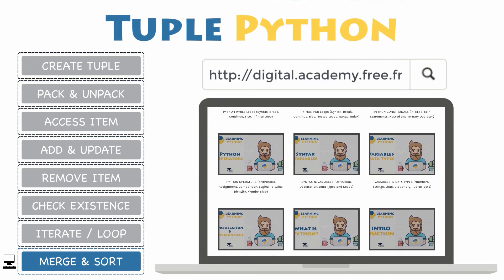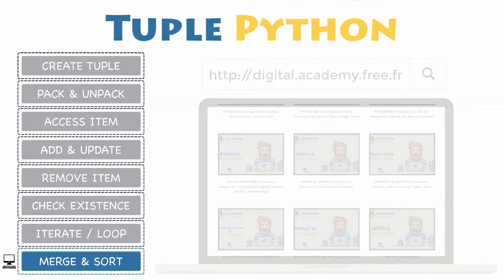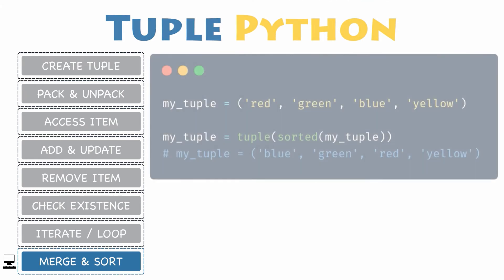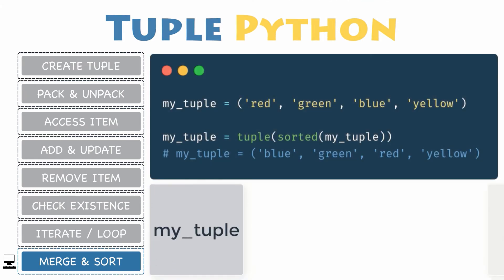But how would you proceed if you need to rearrange items inside of your tuple? There are two methods to sort a tuple: using a built-in method, or converting it into a mutable object first and then rearranging it.